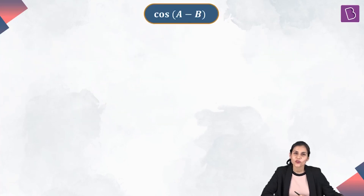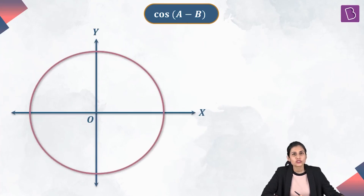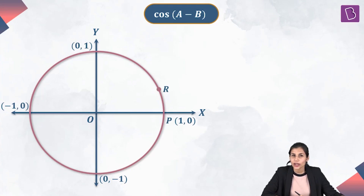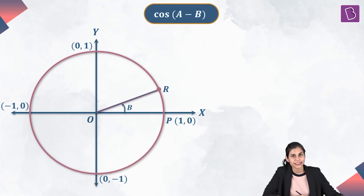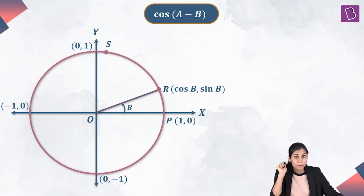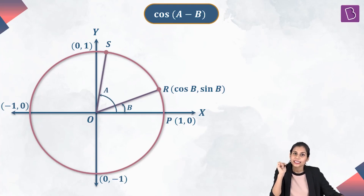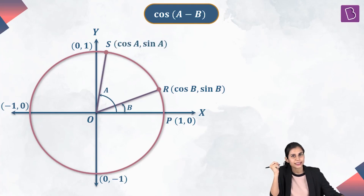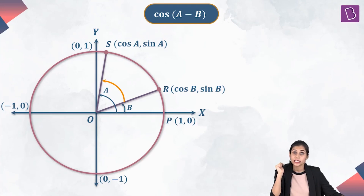Let's begin by computing the cosine ratio of the compound angle A minus B. For that, consider a unit circle — a circle centered at the origin with radius 1 unit. On this circle, let R be a point such that OR makes an angle B with the positive x-axis in the anti-clockwise sense. Then the coordinates of point R are going to be (cos B, sin B). Similarly, consider a point S on the circle such that OS makes an angle A with the positive x-axis in the anti-clockwise sense, giving coordinates of S as (cos A, sin A). Now, can you tell me what is the measure of the angle between them?